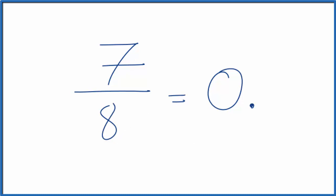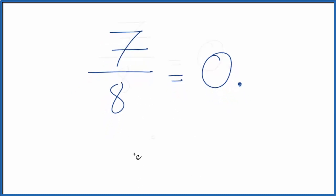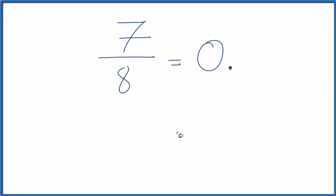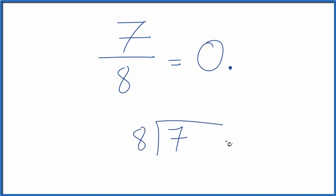So we could do the math here like this. We have seven, and we want to know how many times will eight go into seven? We could use a calculator — that would give us the answer — seven divided by eight, or we can just work it out longhand. Eight is bigger than seven, so we have our zero point here.